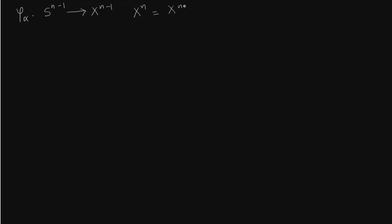So let us make this more clear. So you first take the disjoint union of x^(n-1) and the n-disk to construct x^n. And then you take a point in the boundary of the disk and identify it with the attachment map.